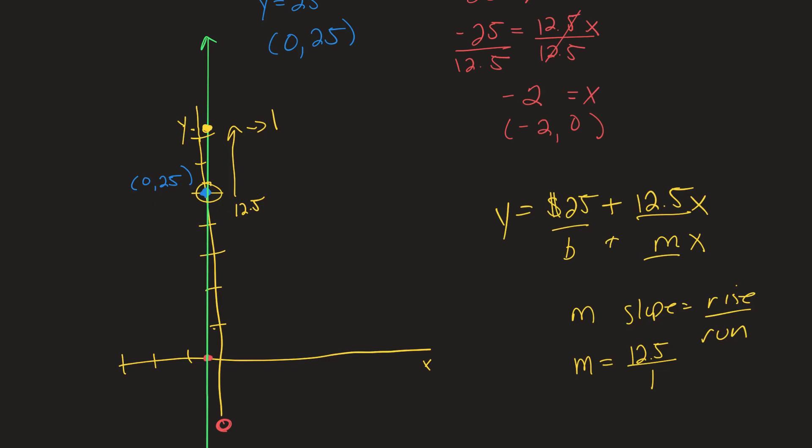So this is the graph implementing both the two-intercept way of doing it and then the slope-intercept form. Now we could have gone right to slope-intercept because b being 25, which is our y-intercept, would have given us this blue point here. And then we could use the 12.5 rise over run to get the second point up here. And that would give us our line as well. But I wanted to go ahead and do them both on the same graph. So you could use whichever method is most comfortable to you.